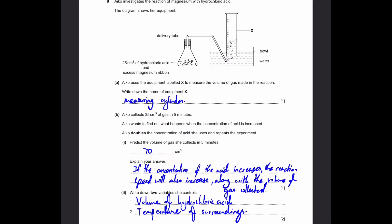Write down two variables she controls. These are the constant variables, or those which she does not change. One is the volume of hydrochloric acid, and two is the temperature of surroundings. Because if the temperature is changed, that means temperature is higher, reaction is faster, temperature is lower, reaction will be a bit slower. That's the answer.